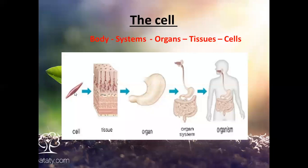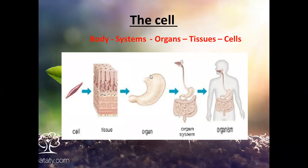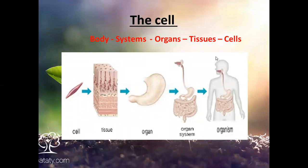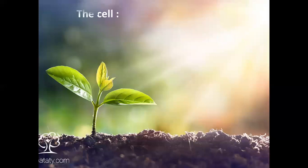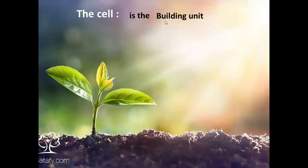If we take one organ like the stomach, we find it consists of tissues, and each tissue is made of many cells. So the largest part in our body is the system and the smallest part is the cell. When we put many cells together they make a tissue, many tissues make an organ, and a group of organs makes a system.